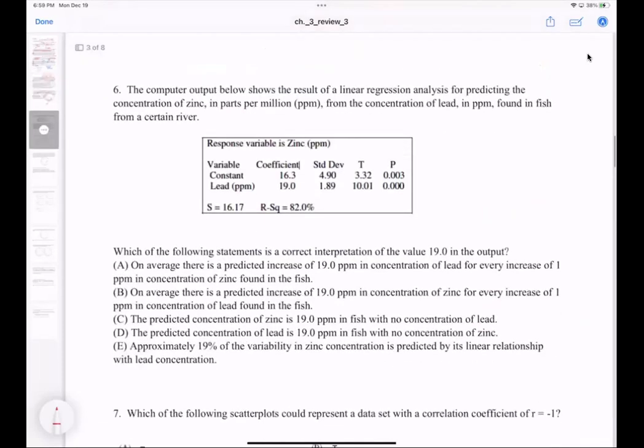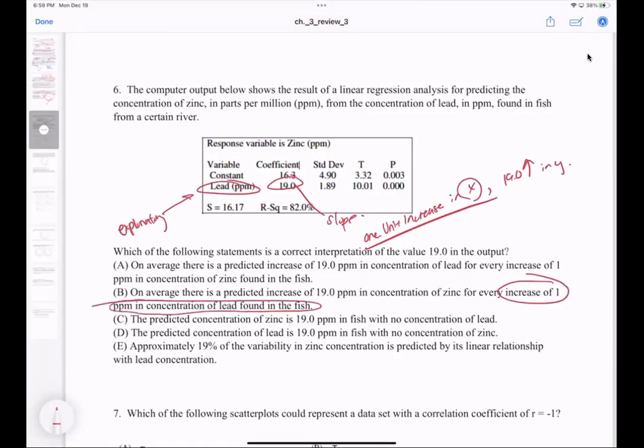Which statement is the correct interpretation of 19.0? That's a slope, so I want to pick the one that says for every unit increase in x, there's a 19.0 increase in y. What is x in this case? That's your explanatory variable. I want to look for the one that says lead, so for every increase of one ppm in concentration of lead found in the fish, there's a 19.0 concentration of zinc increase. That's B. They kind of swapped up the way I say things.